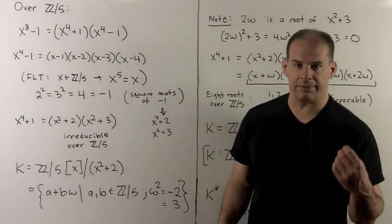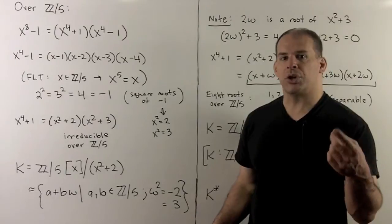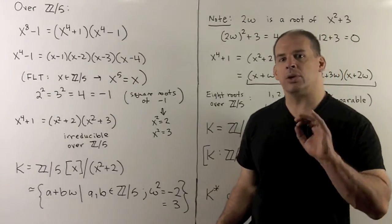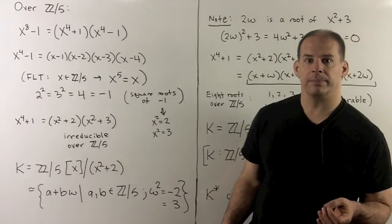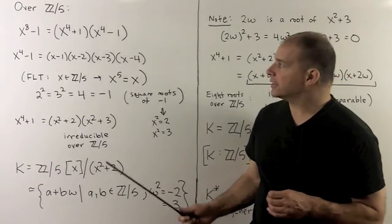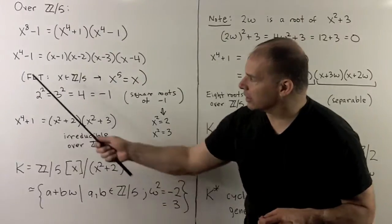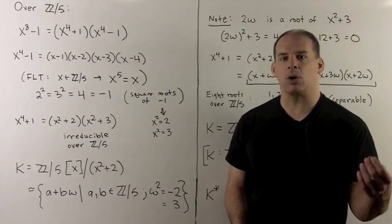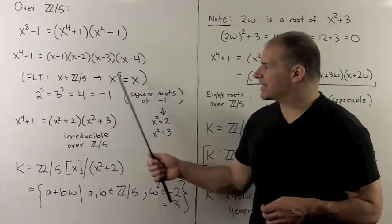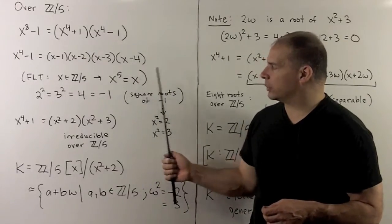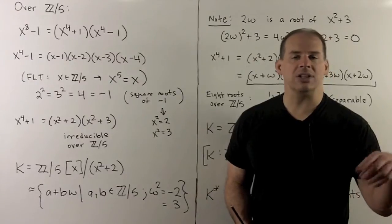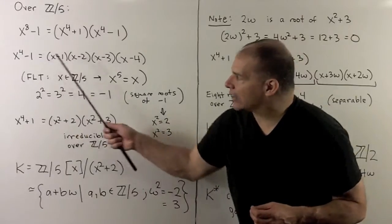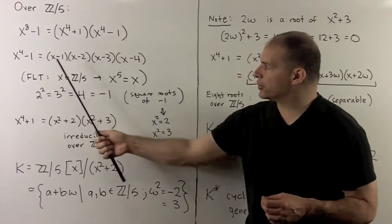Let's see what happens when we move over to Z mod 5. We could start with our factorization from before as a first step. But the irreducibles may now factor over Z mod 5. In fact, first by Fermat's little theorem, for x in Z mod 5, x^5 is always equal to x. So if x is non-zero, then x^4 = 1. Or each non-zero x is a root of x^4 - 1. So this is going to factor into linear factors over Z mod 5.